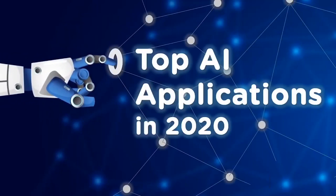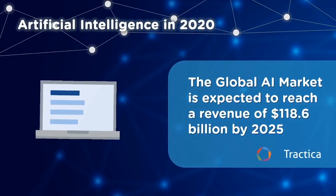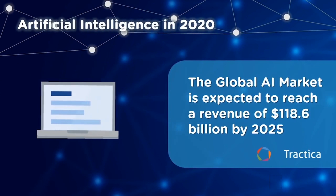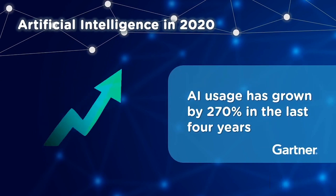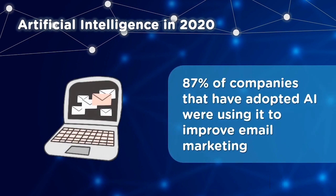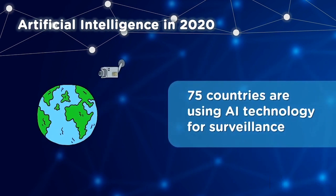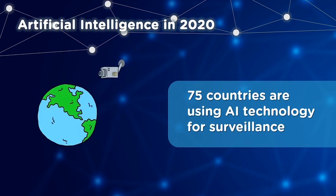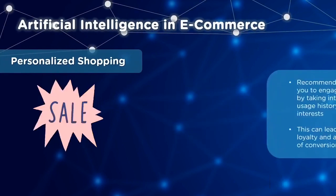Welcome to this Simply Learn session on AI applications in 2020. Artificial intelligence refers to intelligence displayed by machines that simulates human intelligence — basically the ability of a machine or program to think and learn. Let's look at the current market state of AI. According to a market research firm, the global AI market is expected to reach $118 billion by 2025. Gartner reports AI usage has grown by 270% in the last four years. In fact, 87% of companies that adopted AI were using it to improve email marketing, and 75 countries are now using AI technology for surveillance.